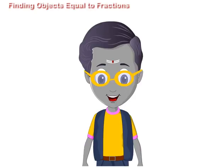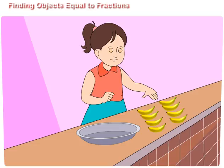Let us now find three-fourths of eight bananas. Renuka wants to use three upon four of eight bananas for making a sweet dish. What will she do?